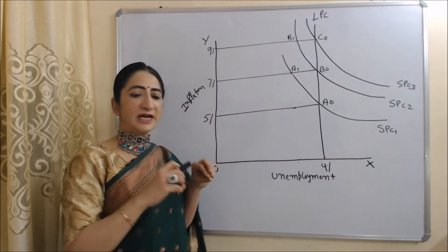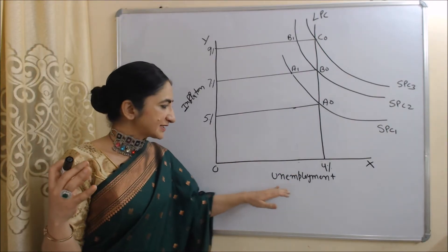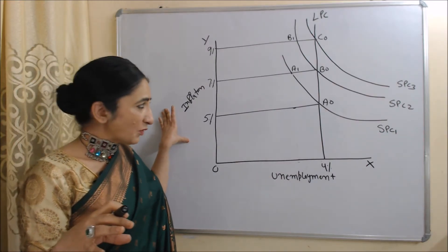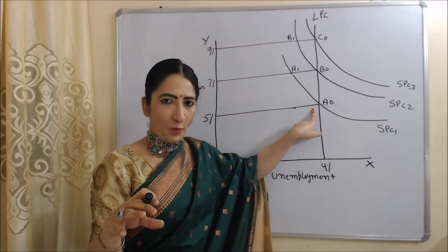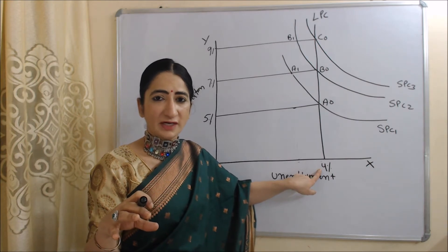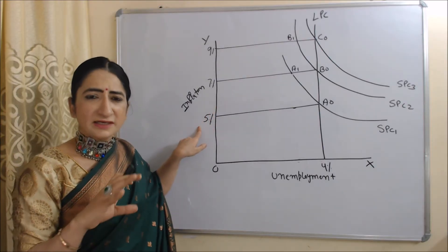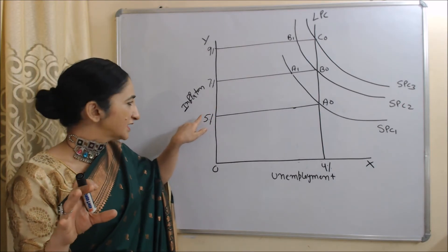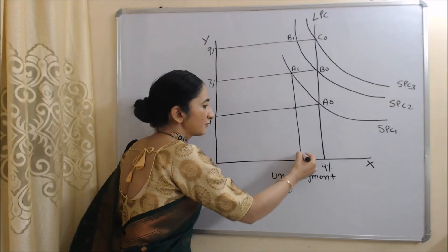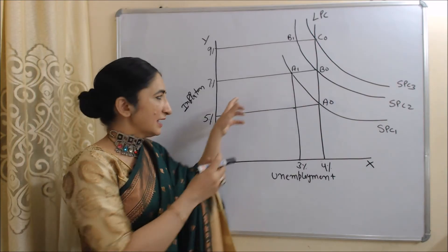Now with the help of this diagram we will clearly understand adaptive expectation and the Phillips curve. On the x-axis we have the unemployment rate and on the y-axis we have inflation. Suppose initially our economy is at point A0, where the unemployment rate is 4% — this is called the natural rate of unemployment — and the inflation rate is 5%. Now suppose through any government policy inflation increases from 5 to 7%.